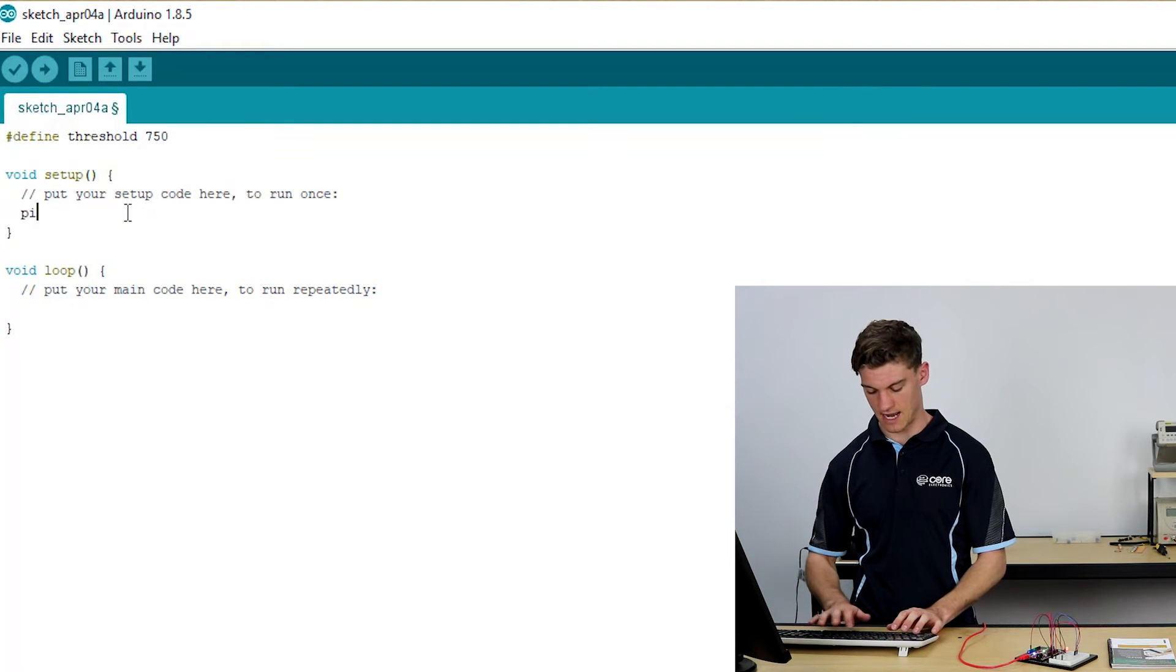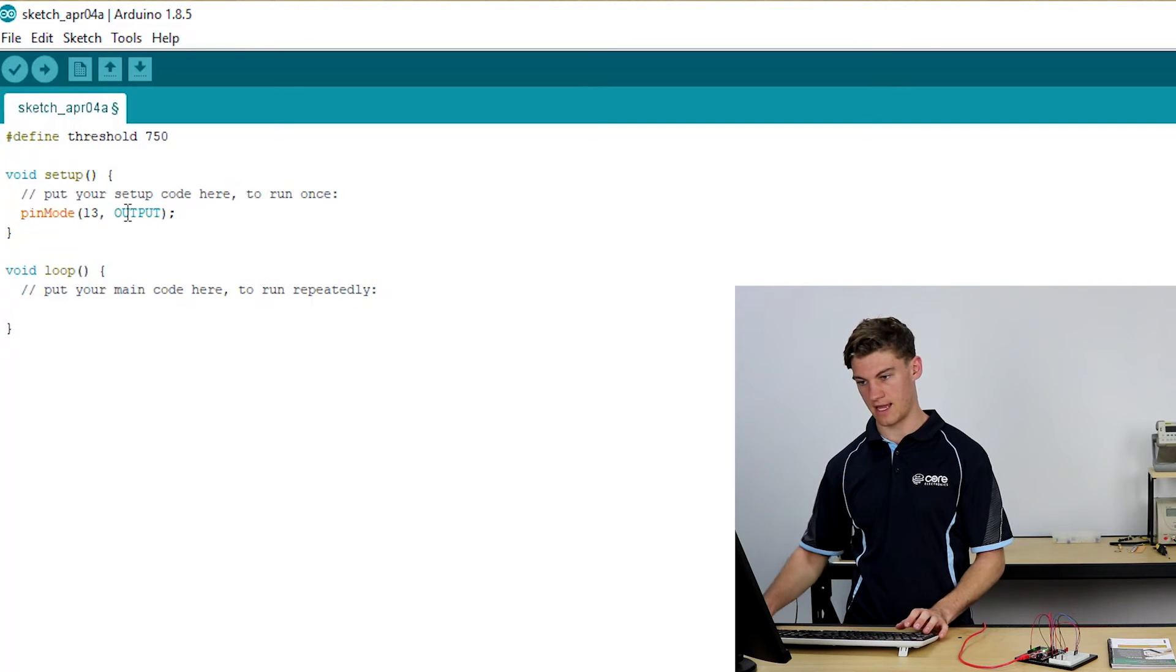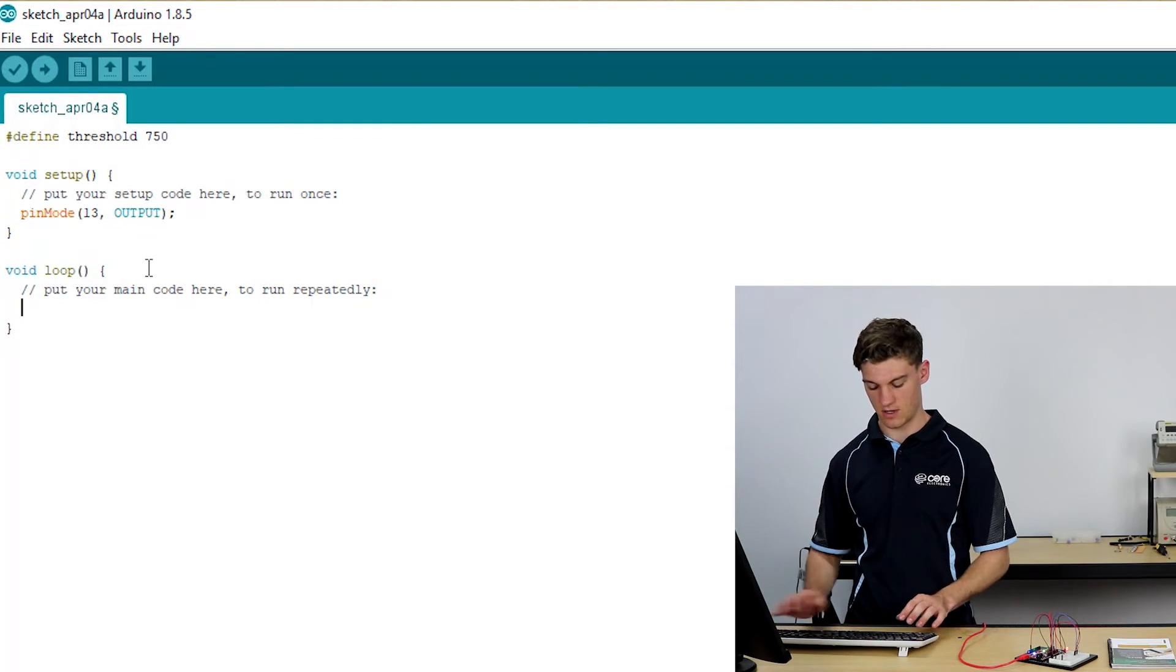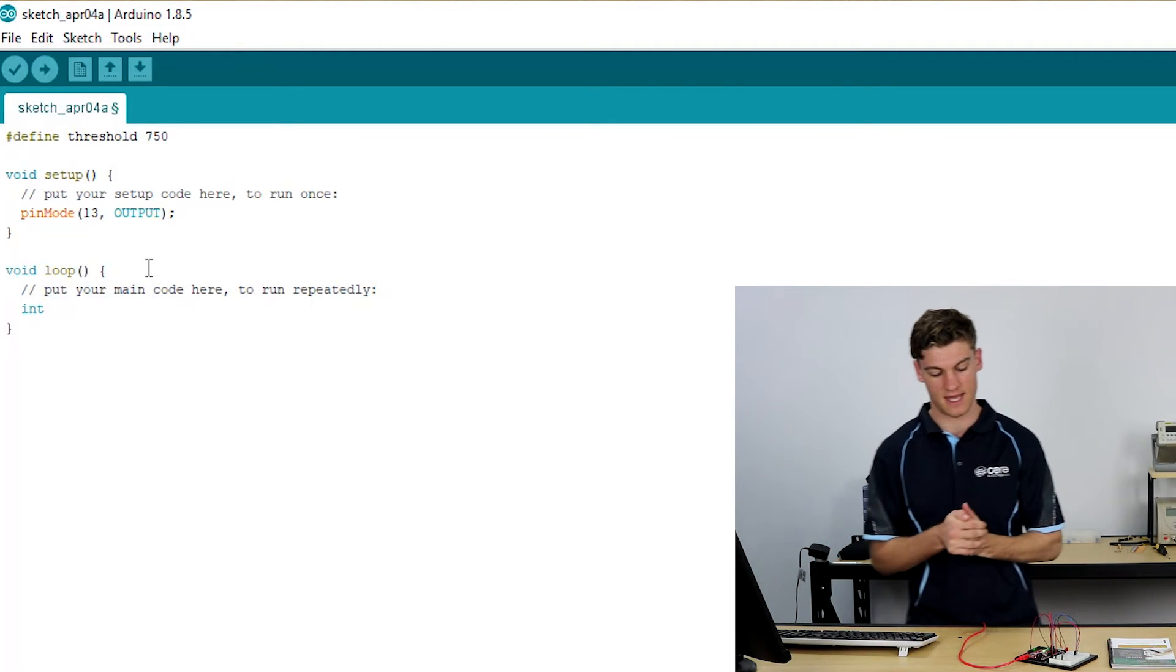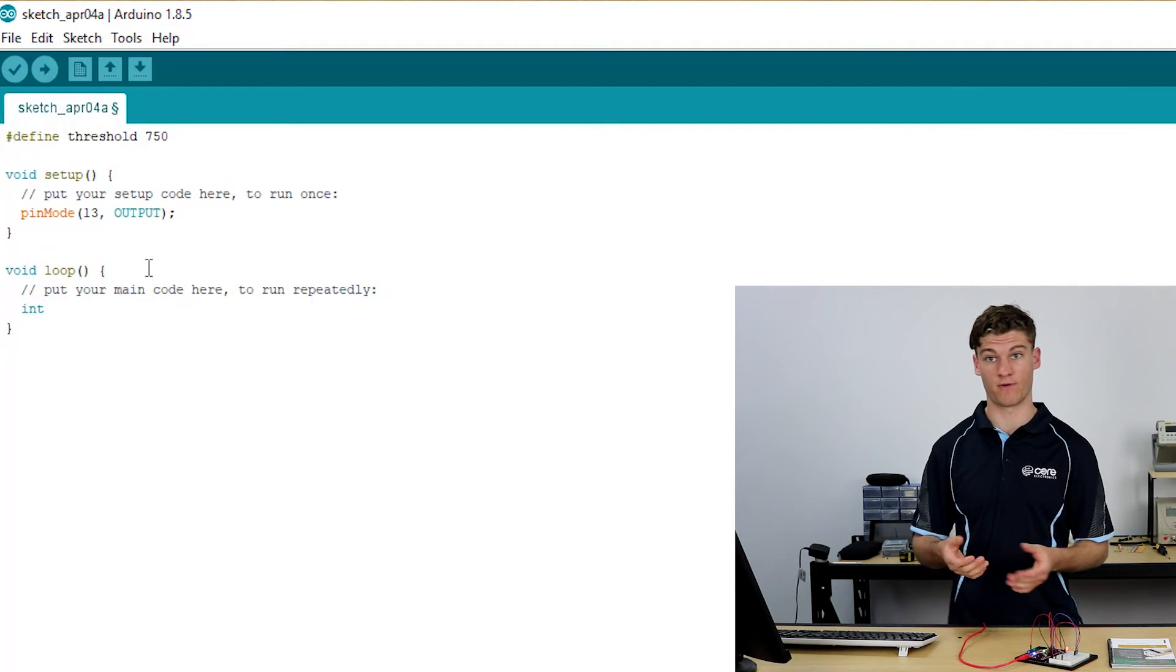We're going to set our pin mode of pin 13 to output, and we are going to in the main loop make another integer and that integer is going to be the value at A0 or the value of the voltage divide.